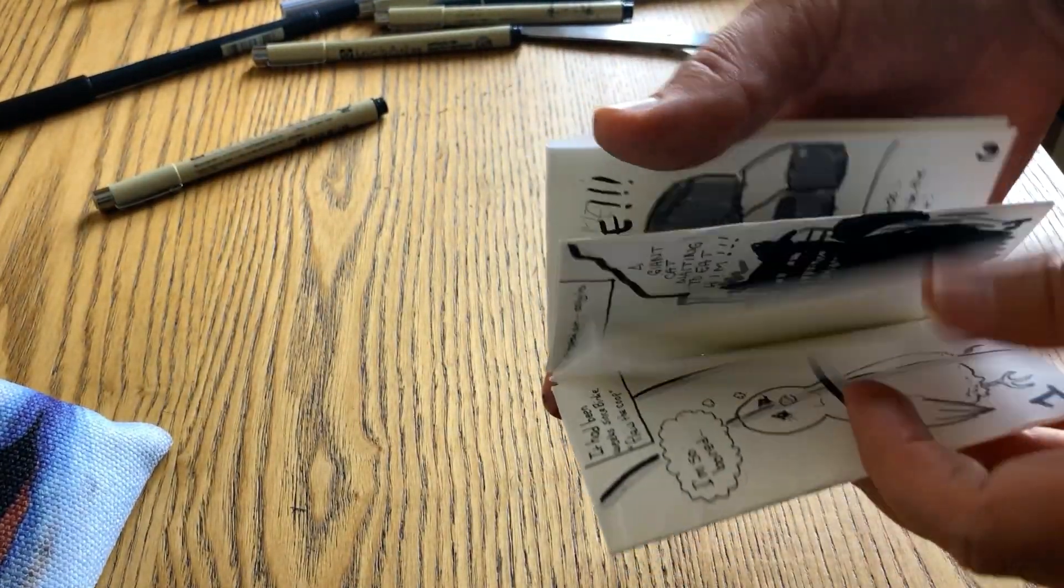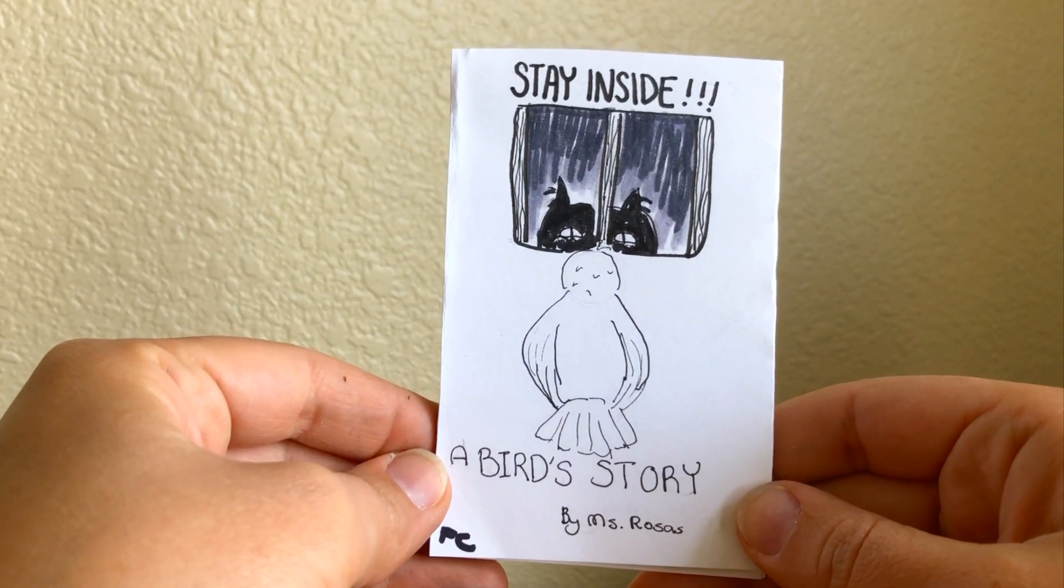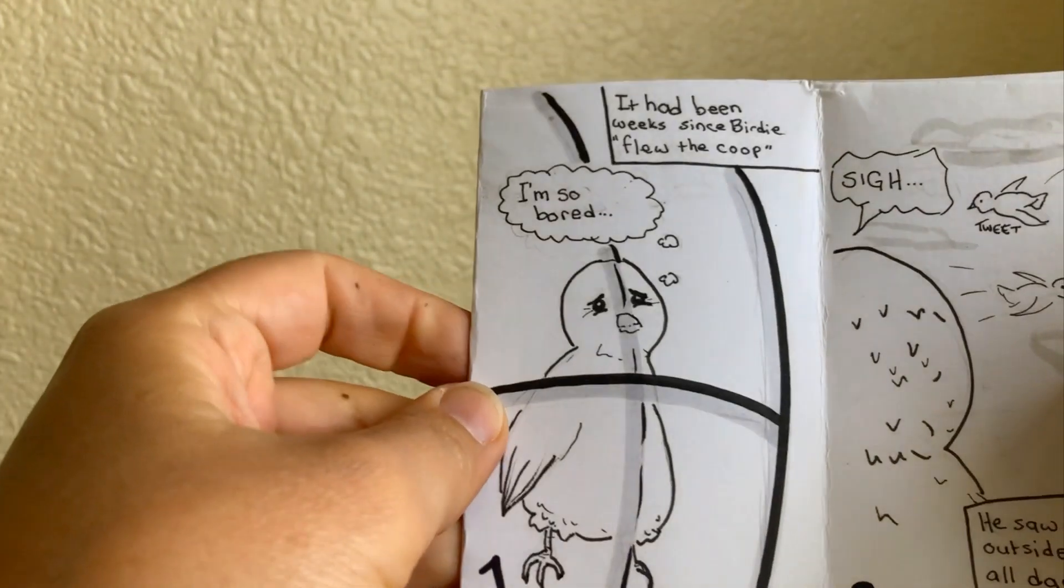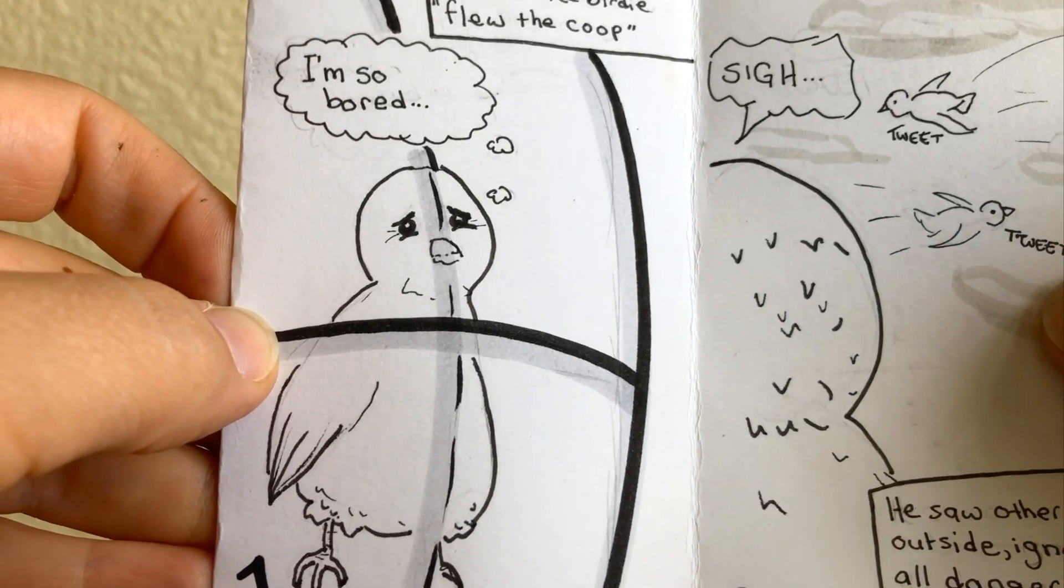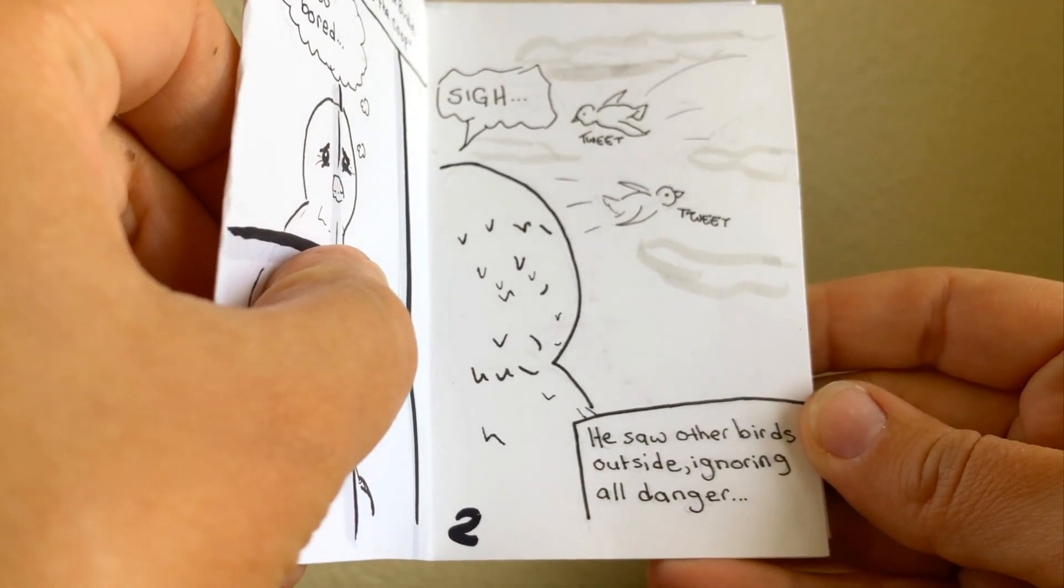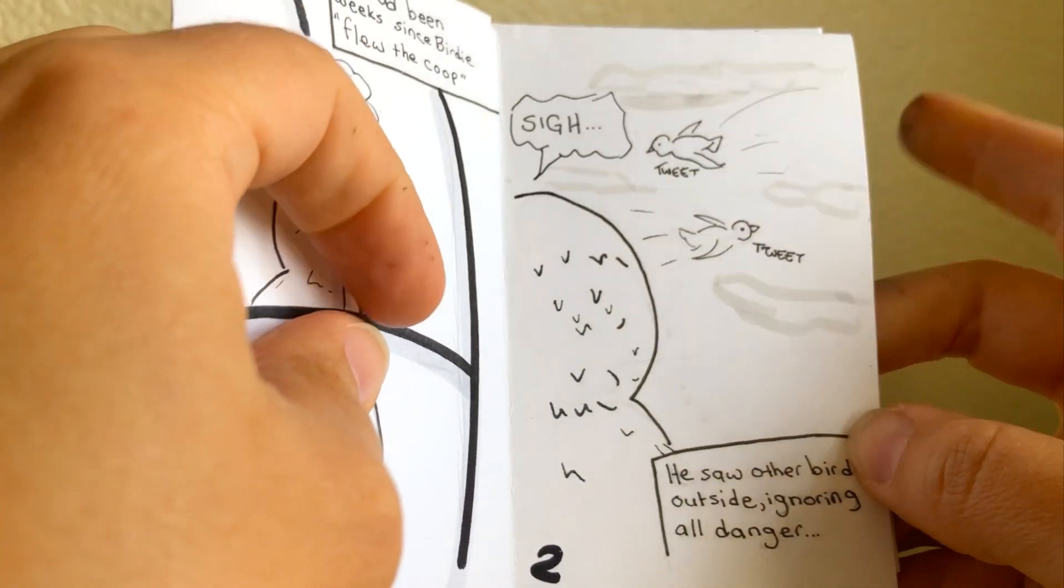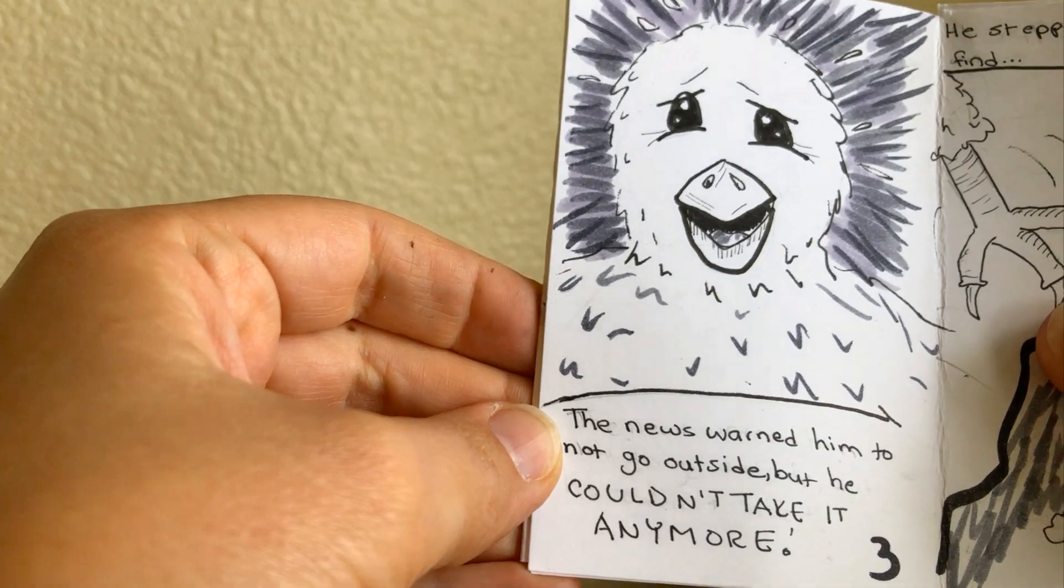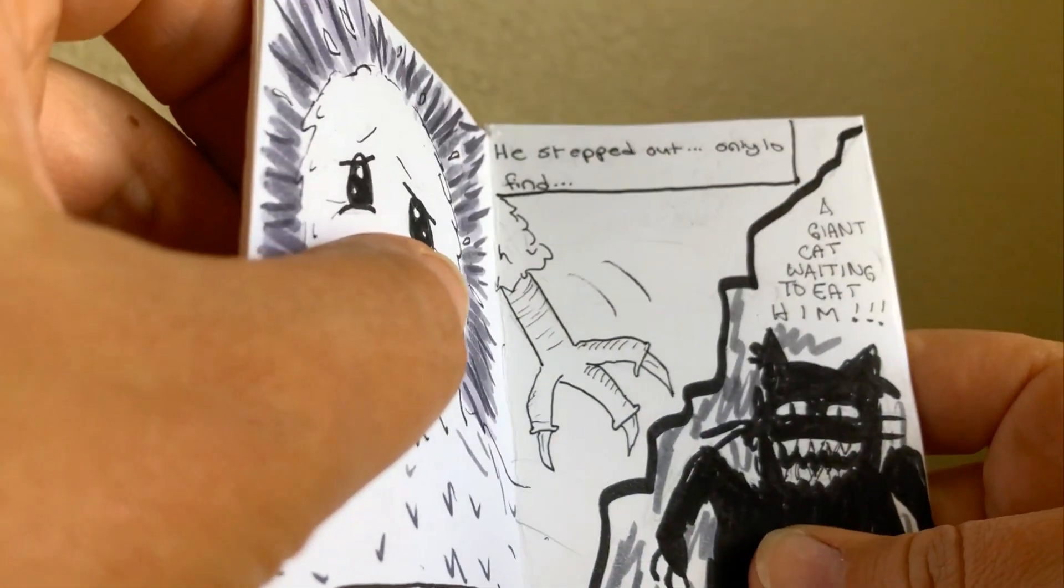Now it's story time. Stay Inside: A Bird Story by Miss Roses. It had been weeks since birdy flew the coop. "I'm so bored," he saw all the other birds outside, ignoring all danger. Sigh. The news warned him not to go outside, but he couldn't take it anymore. "I'm going crazy."